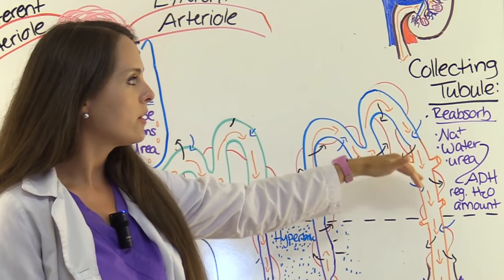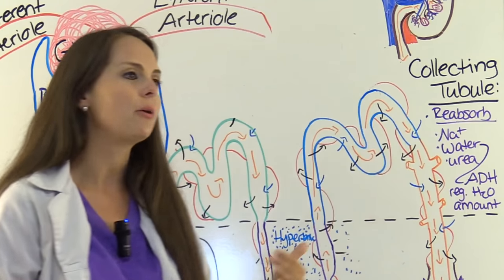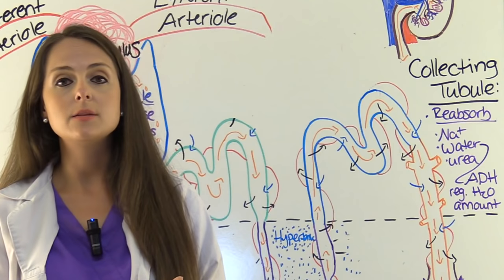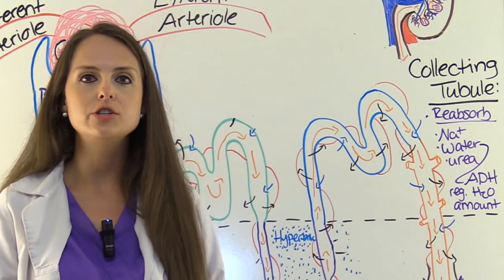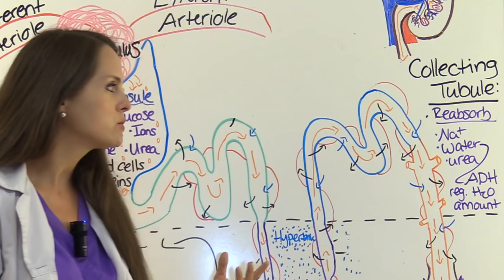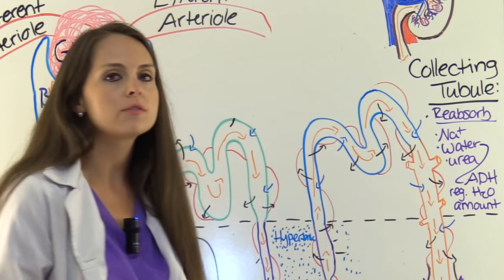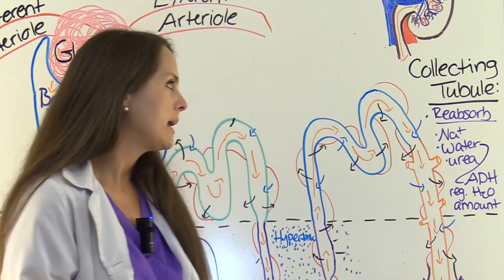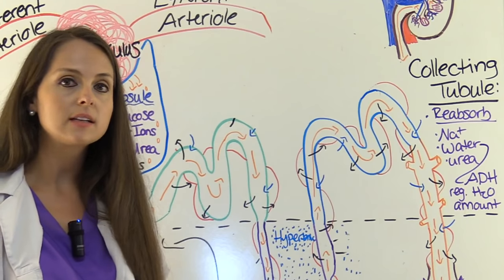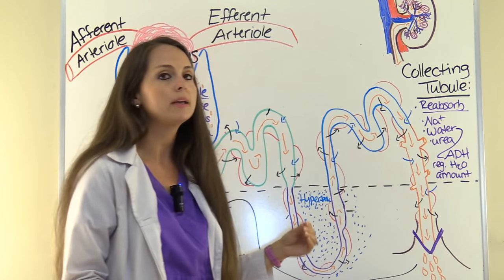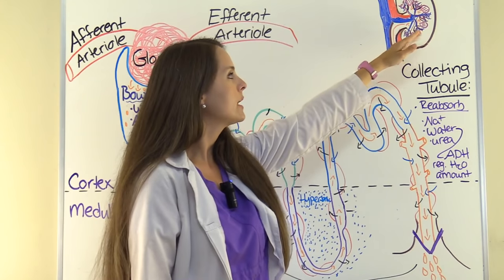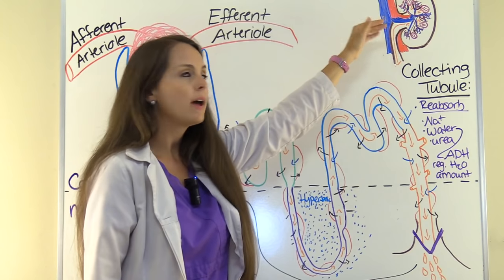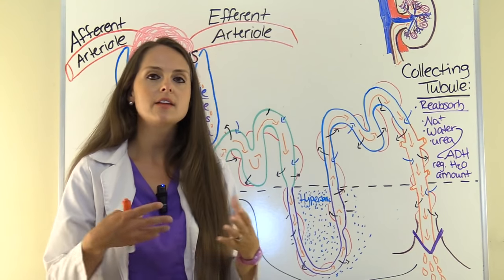The filtrate goes down through the last part of the nephron, the collecting tubule, where the final touches on the filtrate occur. What needs to be reabsorbed gets returned to the bloodstream and what doesn't exits as urine. The collecting tubule reabsorbs sodium, water — under the influence of antidiuretic hormone which regulates body water — and some urea. It then leaves the collecting duct, connects to the renal papilla, flows down into the minor calyx, major calyx, renal pelvis, out through the ureter, stored in the bladder, and voided out through the urethra.